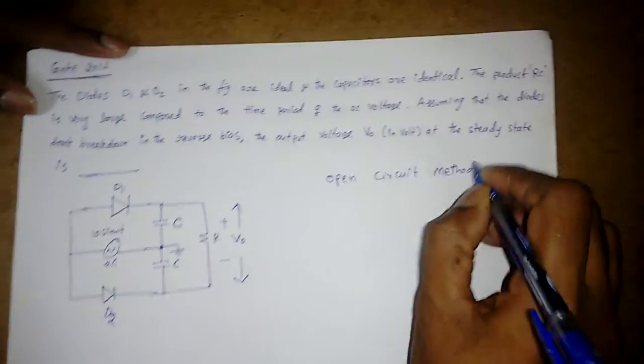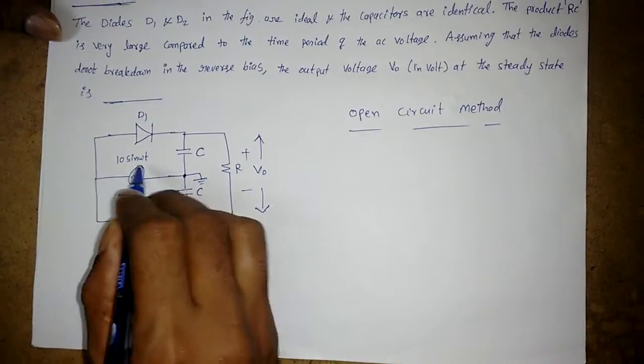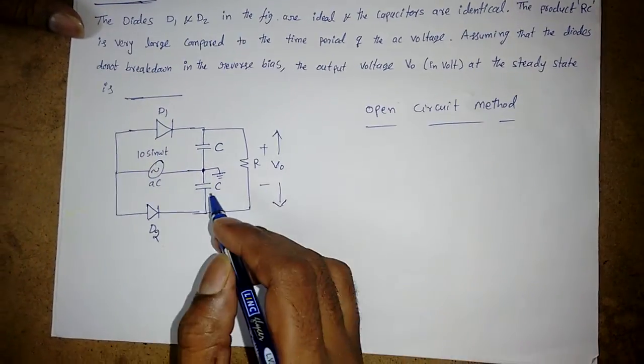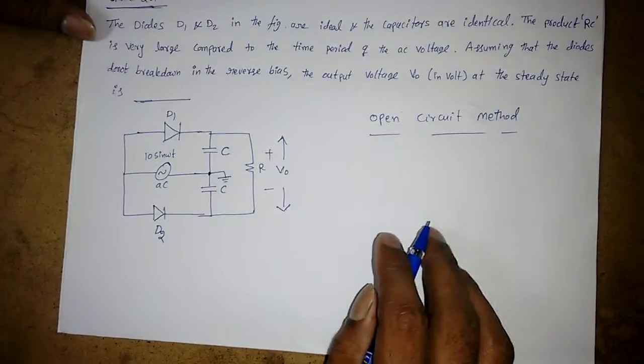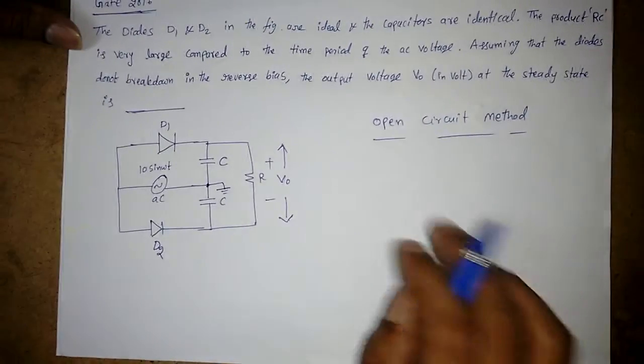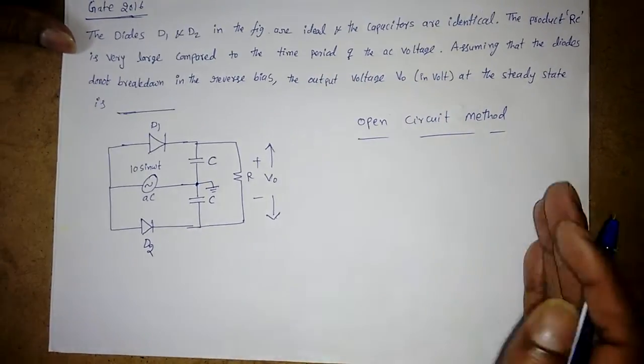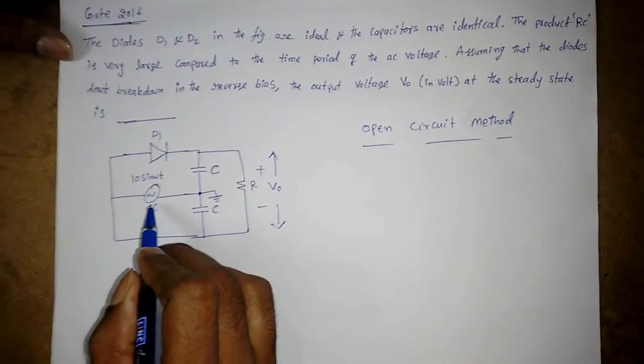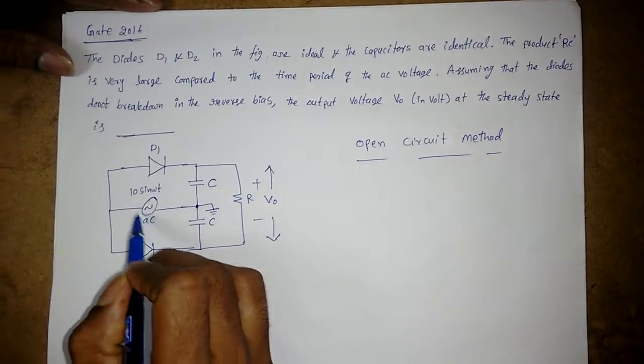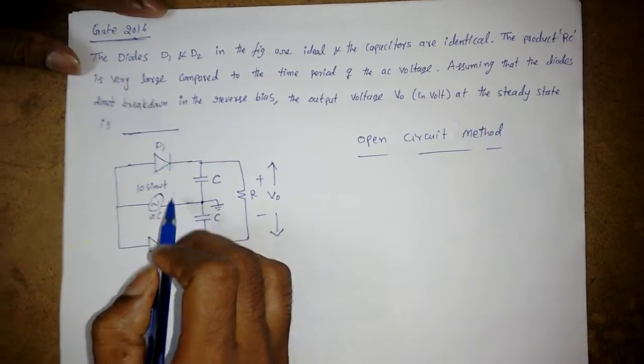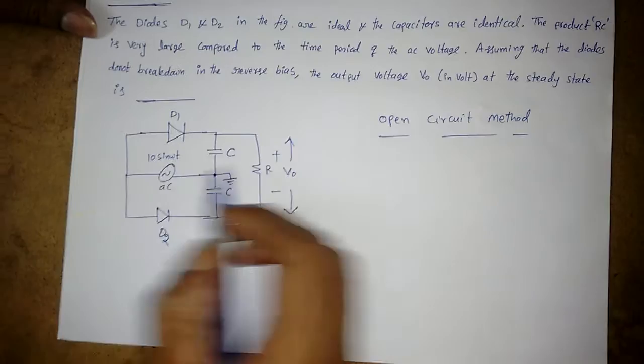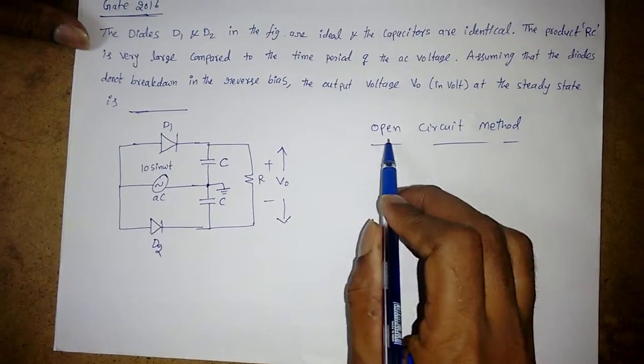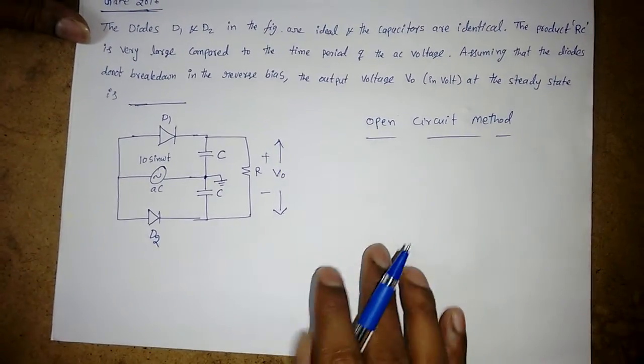Open circuit method, because the input we are applying is a sinusoidal signal that is varying. Whenever DC sources are there, it is very good when you use short circuit method. But when it is a sinusoidal signal, you cannot apply the short circuit method because the current is varying. So it will be very useful if you use open circuit method.